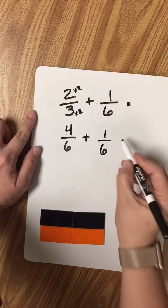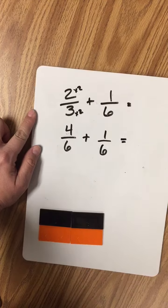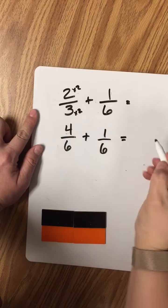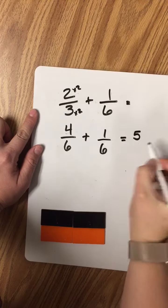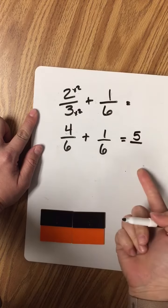Now, I can add straight across since I have a common denominator between the two fractions. 4 plus 1 equals 5, and I just slide the 6 on over.